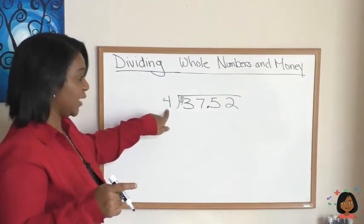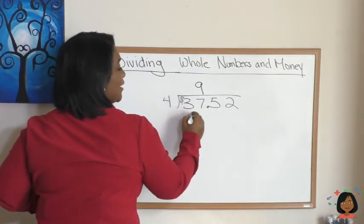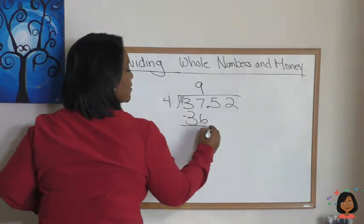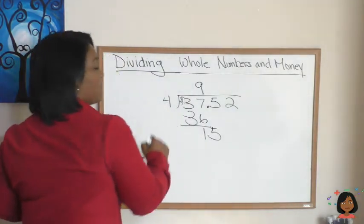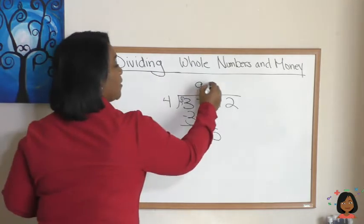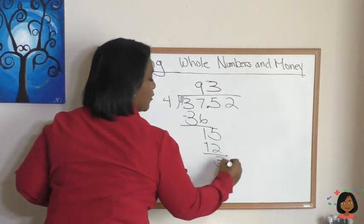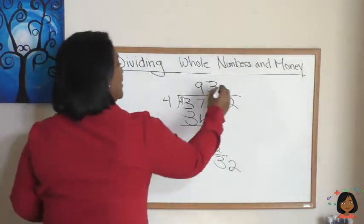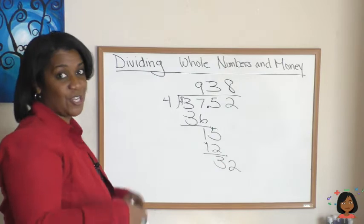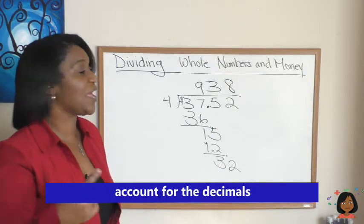Four can't go into 3, but it can go into 37. Nine times. 9 times 4 is 36. Okay. Let's bring down our 5. Four into 15 goes 3 times. There we go. Three left over. Bring down our 2 and 4 goes into 32 eight times. Are we finished? No.